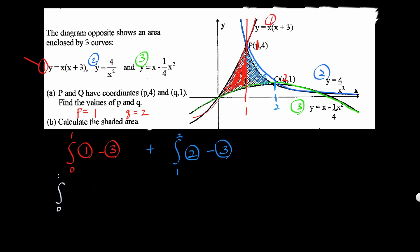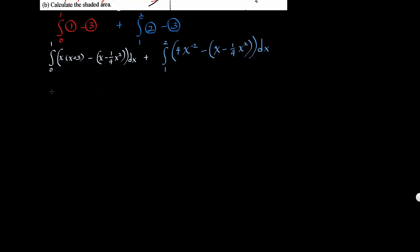So we're integrating from 0 to 1. Equation 1 in terms of x is x times x plus 3 minus equation number 3 would be x minus 1 over 4x squared. The whole thing parentheses, everything times dx. Plus the other one is 1 to 2. Equation number 2 in terms of x would be 4. I'm going to write it as 4x negative second power minus equation number 3 would be the parentheses x minus 1 over 4x squared. Everything dx. So we don't need the figure anymore. Let's integrate this now.